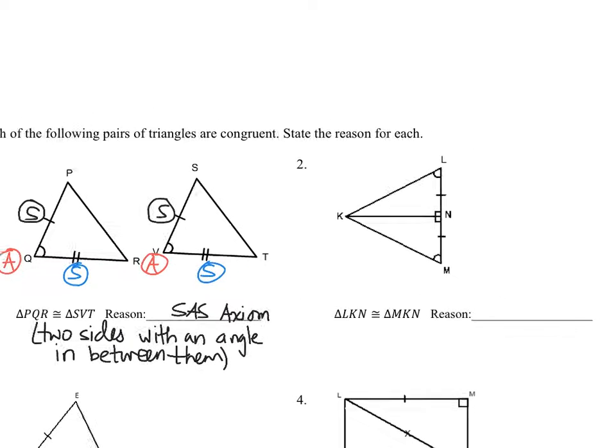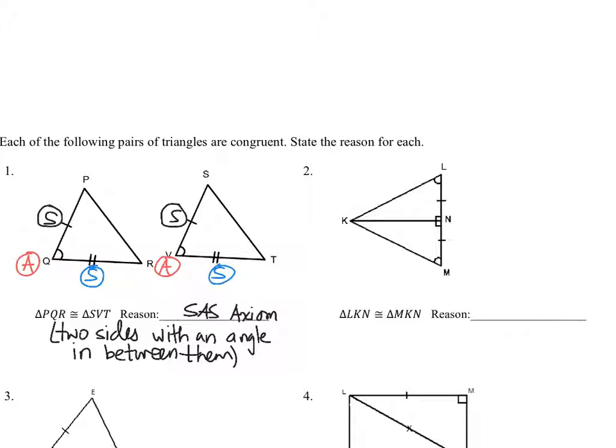Looking at number two, we have an angle corresponding with another angle. The similar markings are how we know that they correspond to one another, or at least that we know that they're congruent to one another. We have two corresponding sides that are congruent.